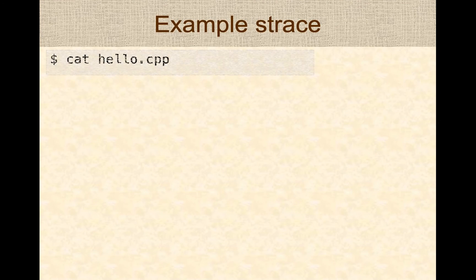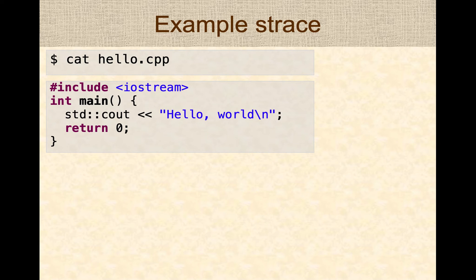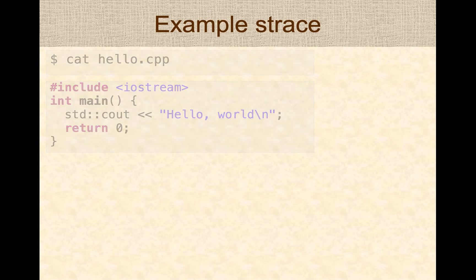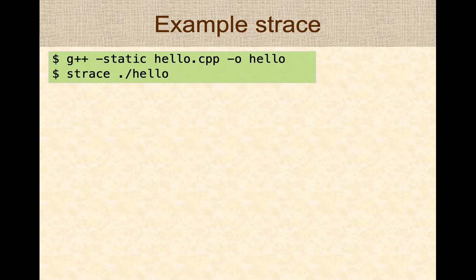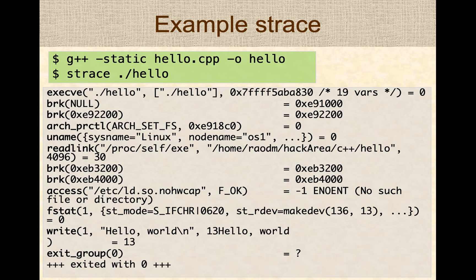Let's look at a simple example. Assume we have a file called hello.cpp that just prints hello world — a very simple file. We keep this example simple so the output from strace is easy to understand. You would typically compile this file, and notice that here we are specifically compiling with a static flag to minimize dynamic libraries so the strace output is not overwhelming. Then we run the program through strace — you say strace ./hello — and strace prints the system calls made by the program.